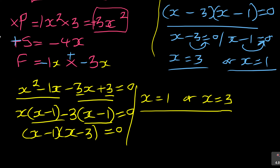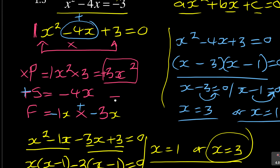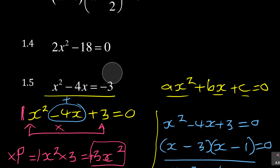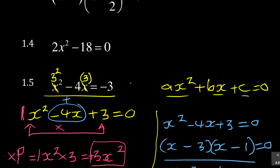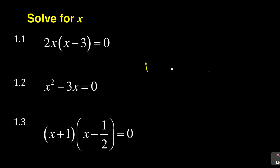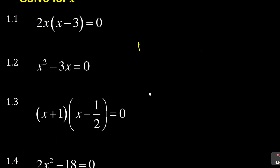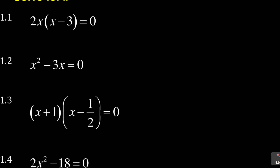Always test your answer. For example, test x equals 3 in the original equation: substitute 3 squared minus 4 times 3, and it must equal negative 3. Left-hand side equals right-hand side — correct! That is how you go about solving these equations.